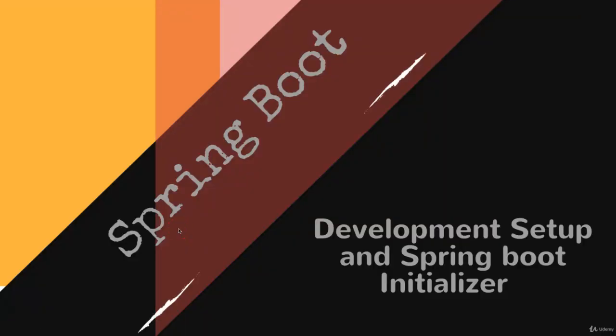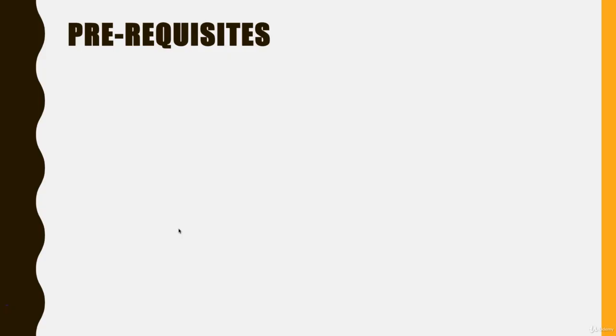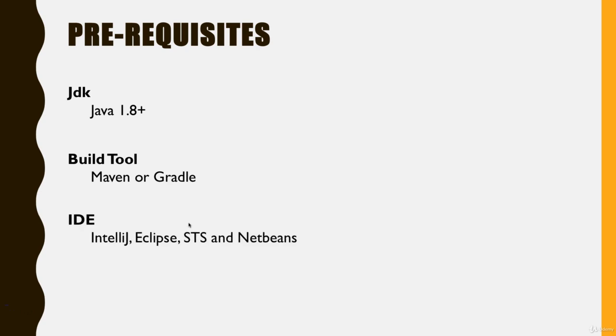In this video we'll discuss the prerequisites for a Spring Boot project and how we can generate a sample Spring Boot project using the Spring Initializer UI or IntelliJ. The prerequisites we need are: JDK 1.8 or newer, a build tool either Maven or Gradle, and an IDE based on your preference. You can use IntelliJ, STS, Eclipse, or NetBeans. I prefer to use IntelliJ because I use it most of the time.